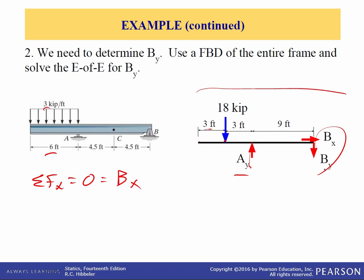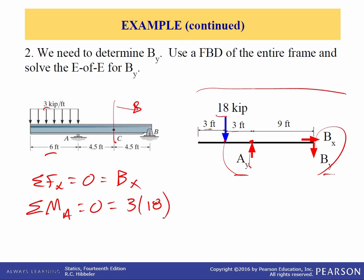Here's a free body diagram of the entire frame. We have 18 kips from 6 times 3, operating at the center of the distributed load, 3 feet from the end of the beam. We have the roller reaction at A and two pin reactions at B. Summing forces in x, B sub x equals 0. To get B sub y, we sum moments about A: 3 times 18 minus B sub y times 9 equals 0, giving B sub y equals 6 kips.